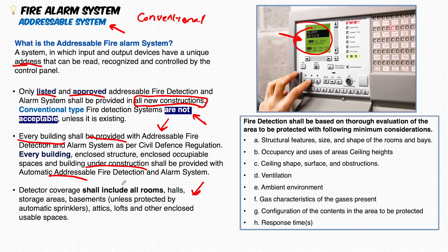Where shall detectors be installed? Previously they were provided only in bedrooms, but per the UAE Civil Defense Code 2018, all rooms and all areas shall be provided with a detector — smoke or heat. If the area is enclosed by walls, ceiling, and a door, it shall have a smoke detector, heat detector, or other suitable type based on design.